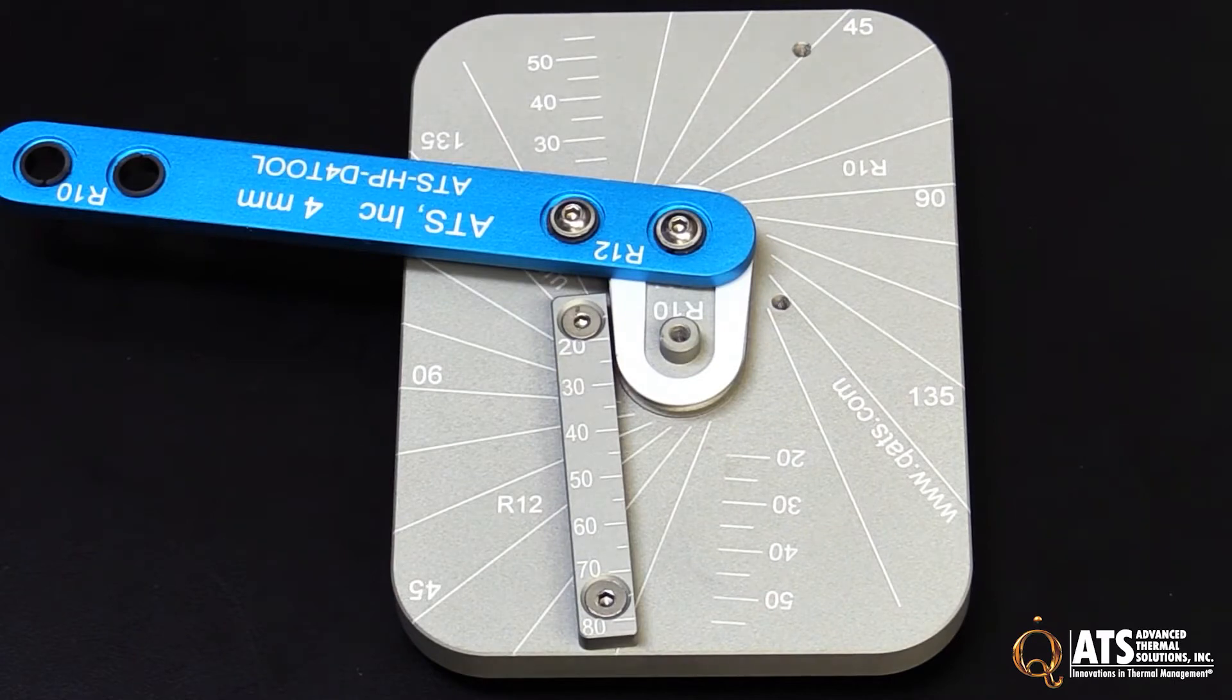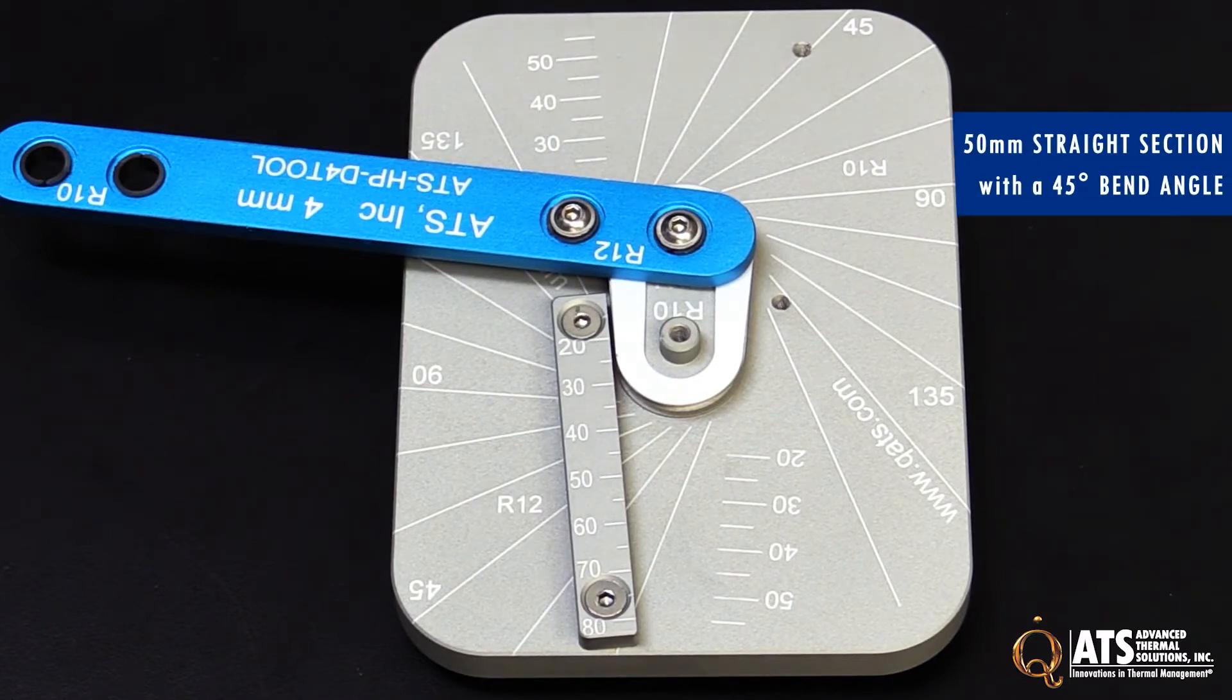Let's demonstrate by using a 4 millimeter heat pipe. We want to have a 50 millimeter straight section with a bend angle of 45 degrees.